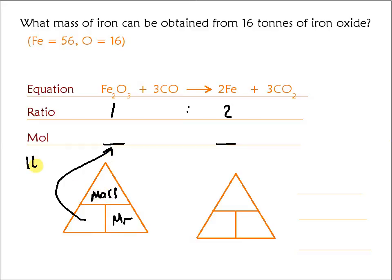The mass is 16 tons, that's 16 times 10 to the 6 grams. The MR is 2 times 56 plus 3 times 16, which comes out as 160. So the amount in mole is 1 times 10 to the 5 of the iron oxide.